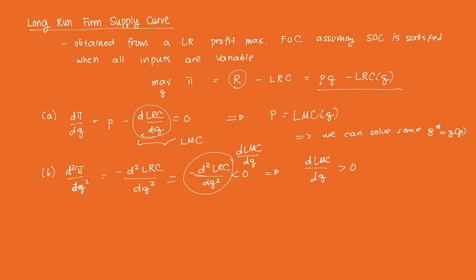The last condition is the profitability criterion. The additional condition for a firm is that it must produce a positive output, and that occurs when p is greater than or equal to long-run average cost (LAC). If this is the case, q* equals q(p). The firm will produce if p ≥ LAC, and q equals zero if p is less than LAC. These are the three conditions to derive an individual firm's long-run supply curve.